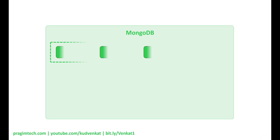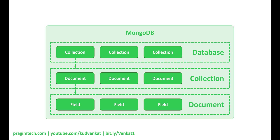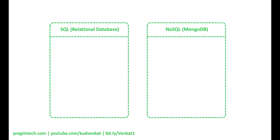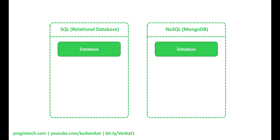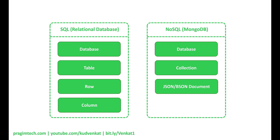In MongoDB, a database contains one or more collections, a collection is made up of one or more documents, and each document is made up of one or more fields. Both in SQL and the non-relational world, we have database at the top. In SQL we have tables; in MongoDB we have collections. Table rows in SQL correspond to BSON documents in MongoDB — BSON is binary JSON. We'll discuss JSON and BSON and the difference between them in just a bit. A column in the SQL world corresponds to a field in a JSON document.